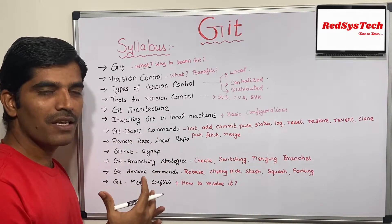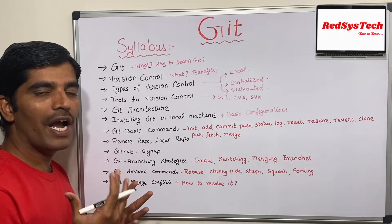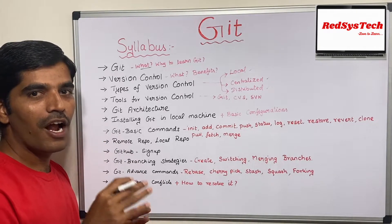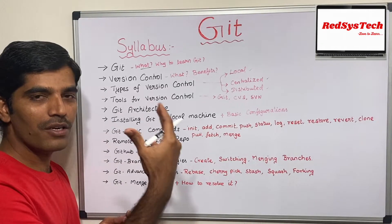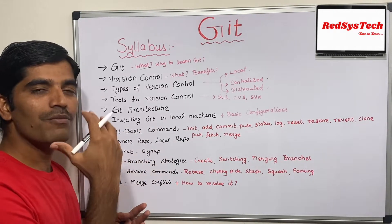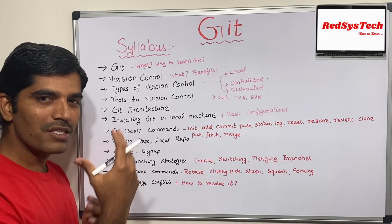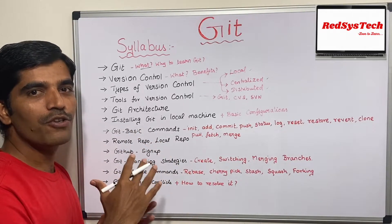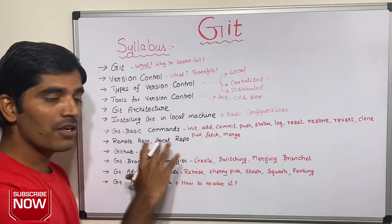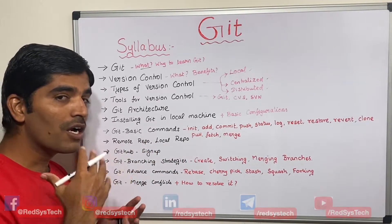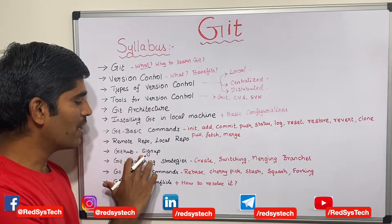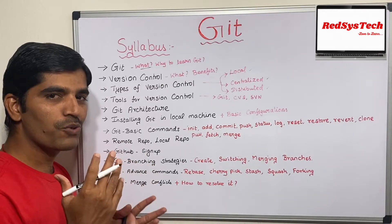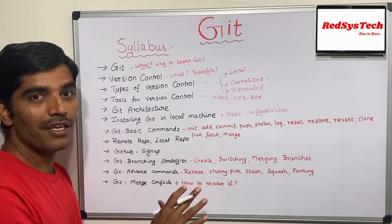We are going to learn basic commands: how to initialize Git in your local machine, how to add your code to the staging area, how to commit your code to your local repository, how to push and pull code, and how to clone your remote repository. We will cover what a remote repository and a local repository are, the difference between them, what branches are, how to create a branch, how to switch branches, and how to merge branches. You will create your own GitHub account — a free cloud-based service — and we will do full practical implementation.